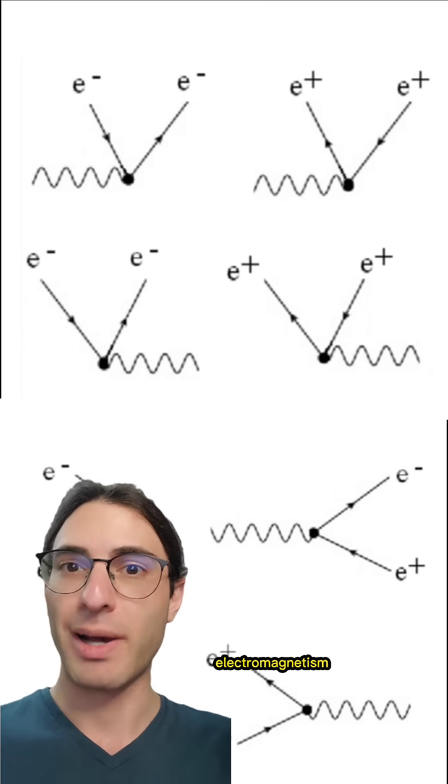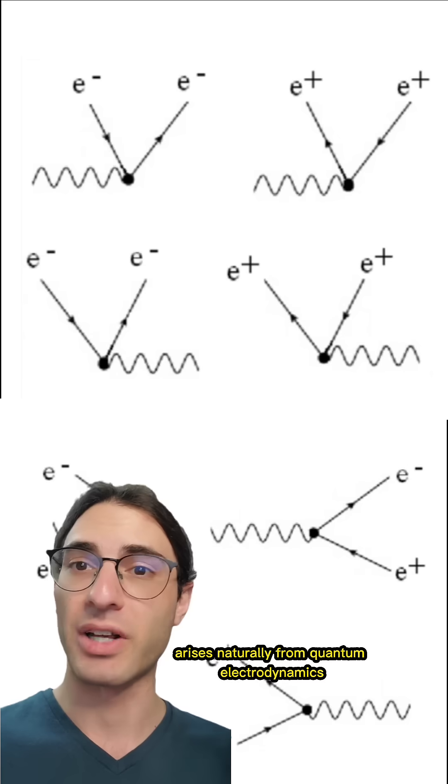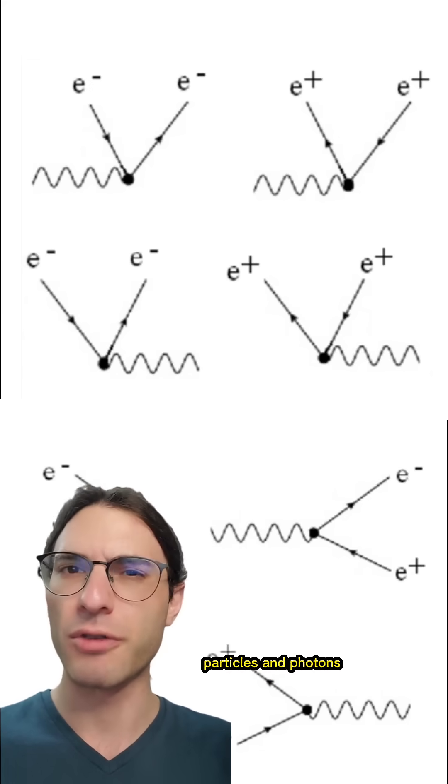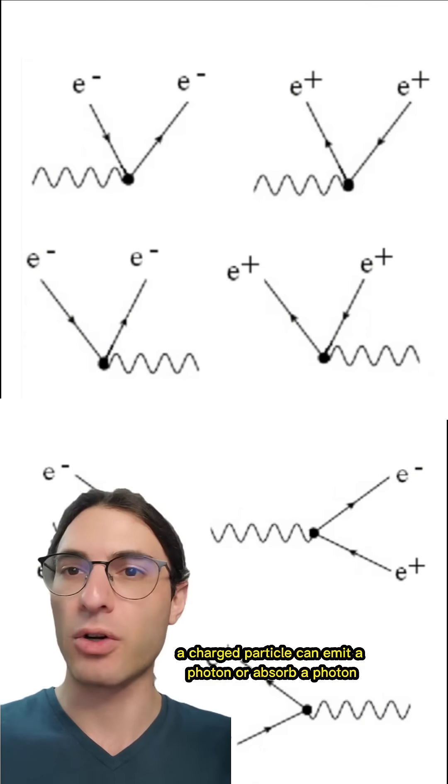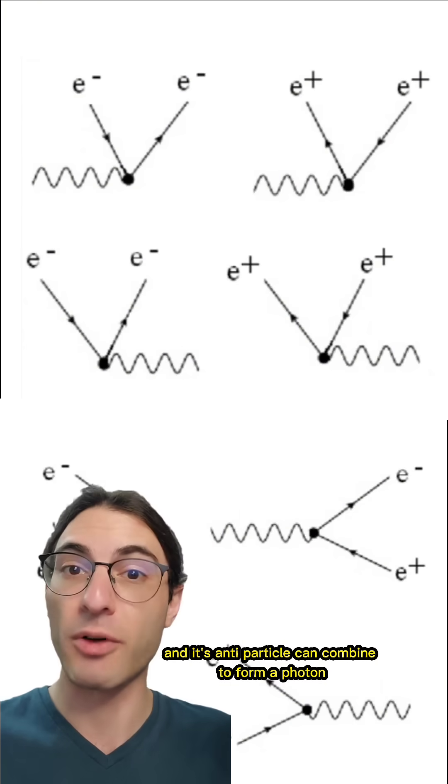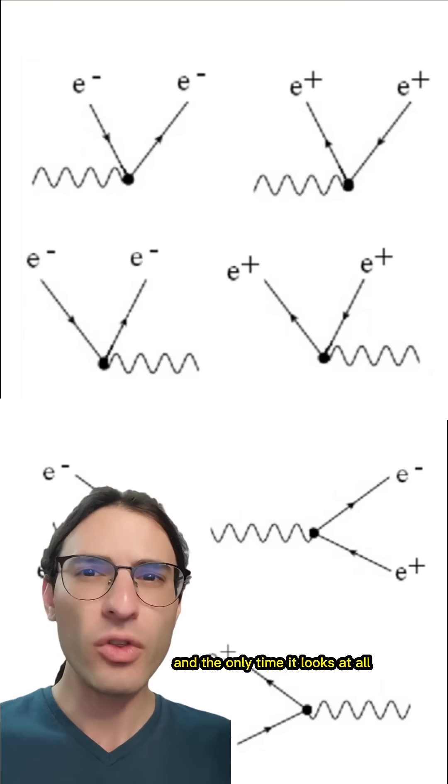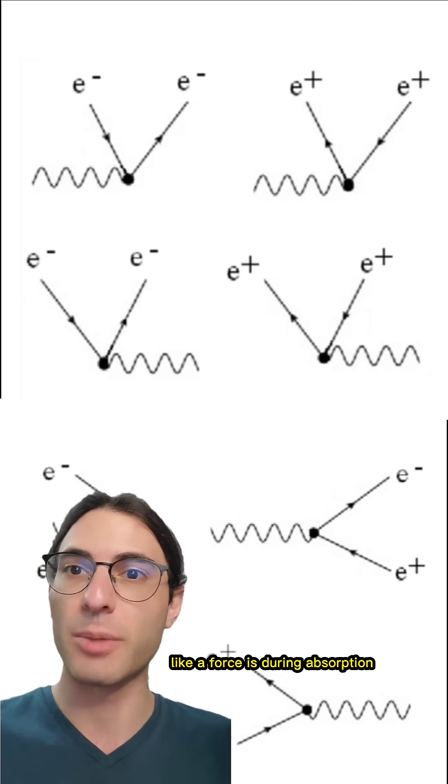The most classical of the forces, electromagnetism, arises naturally from quantum electrodynamics. This quantum field theory describes the interaction between electrically charged particles and photons. In particular, a charged particle can emit a photon or absorb a photon, a particle and its antiparticle can combine to form a photon, or a photon can split into a particle and its antiparticle. And the only time it looks at all like a force is during absorption or emission.